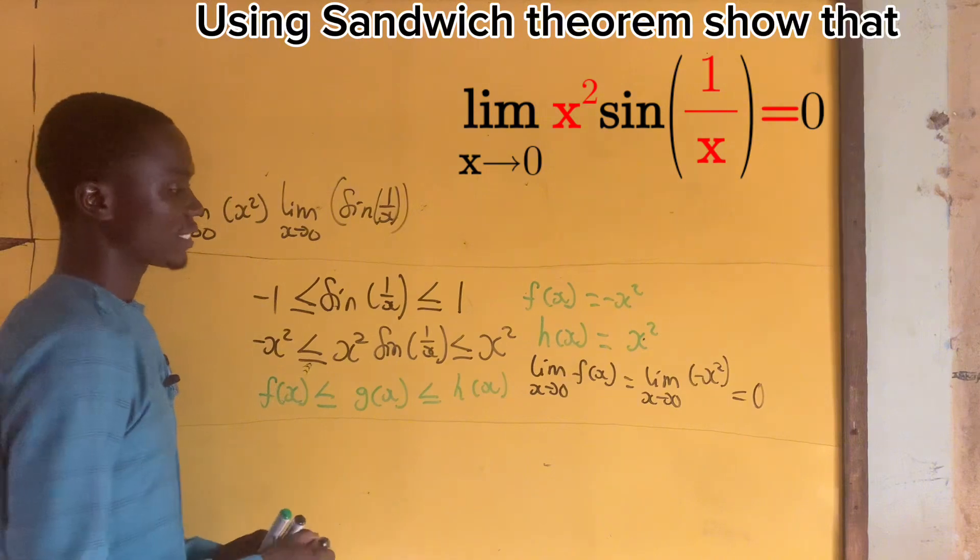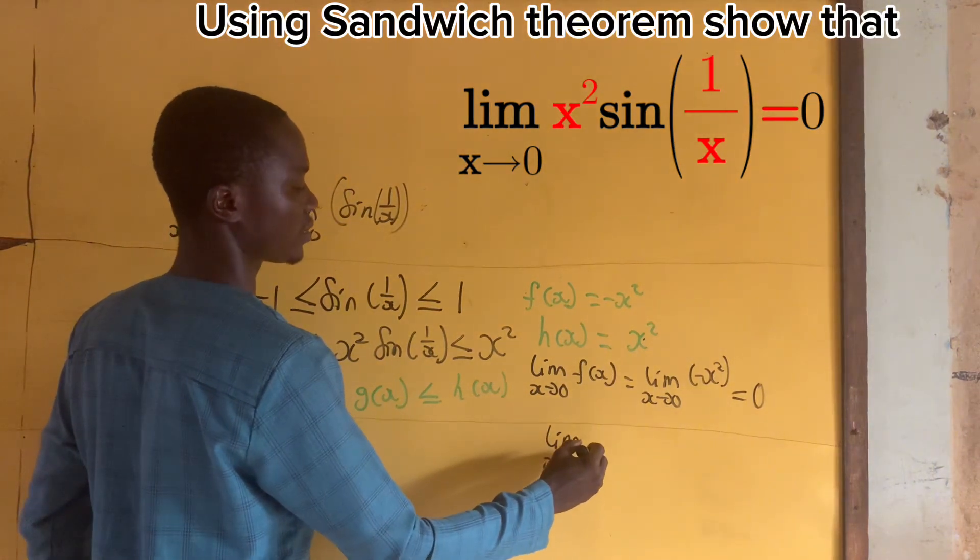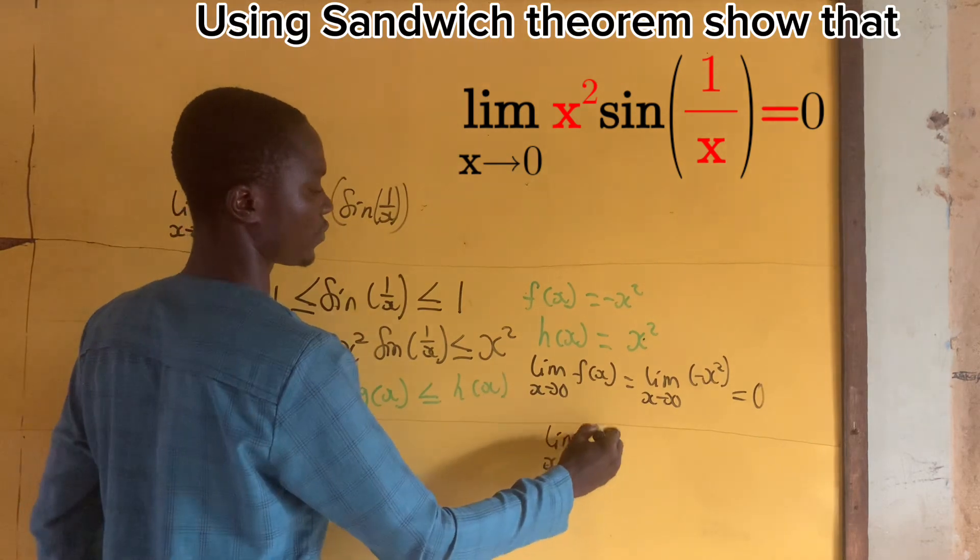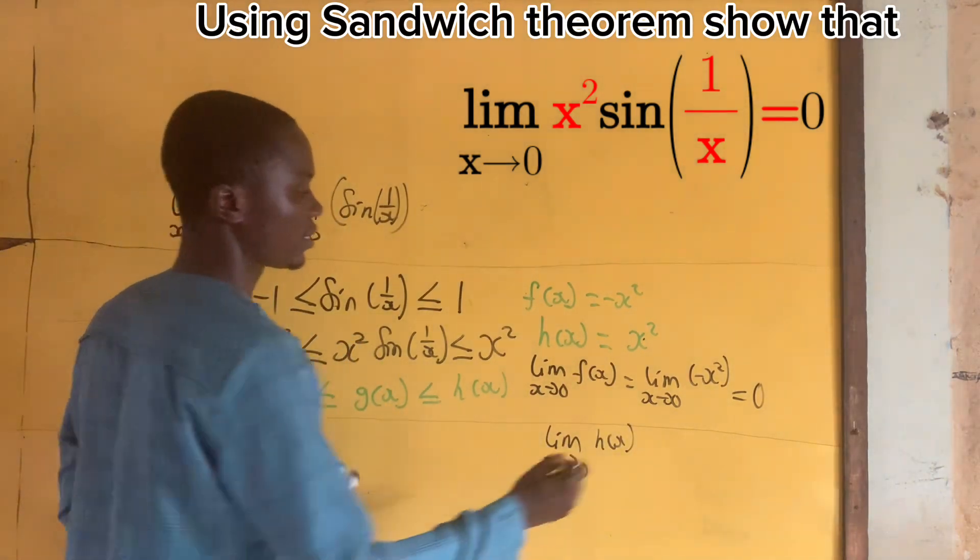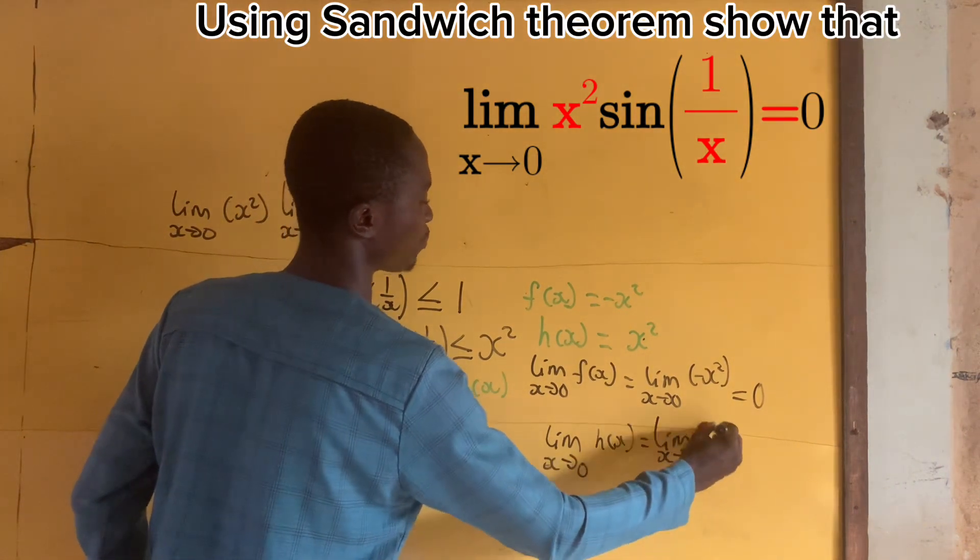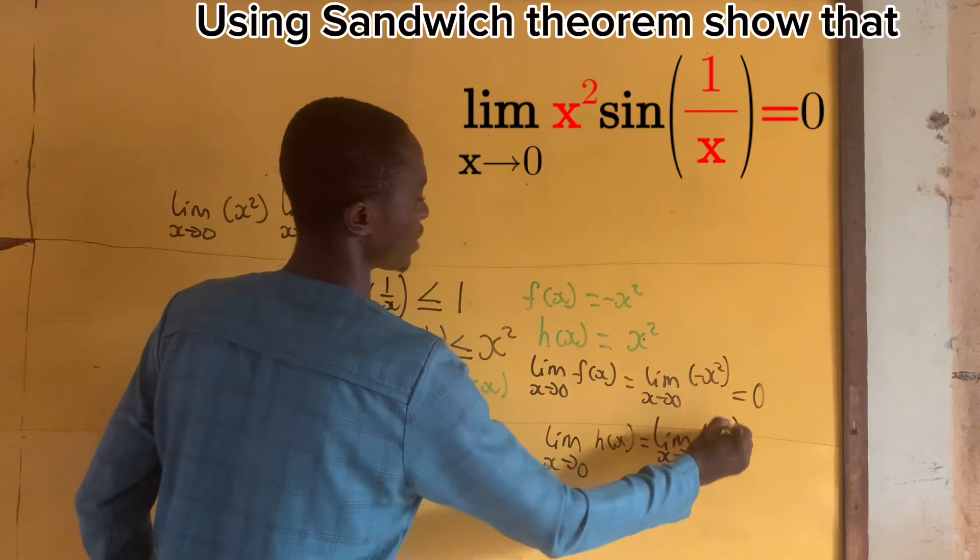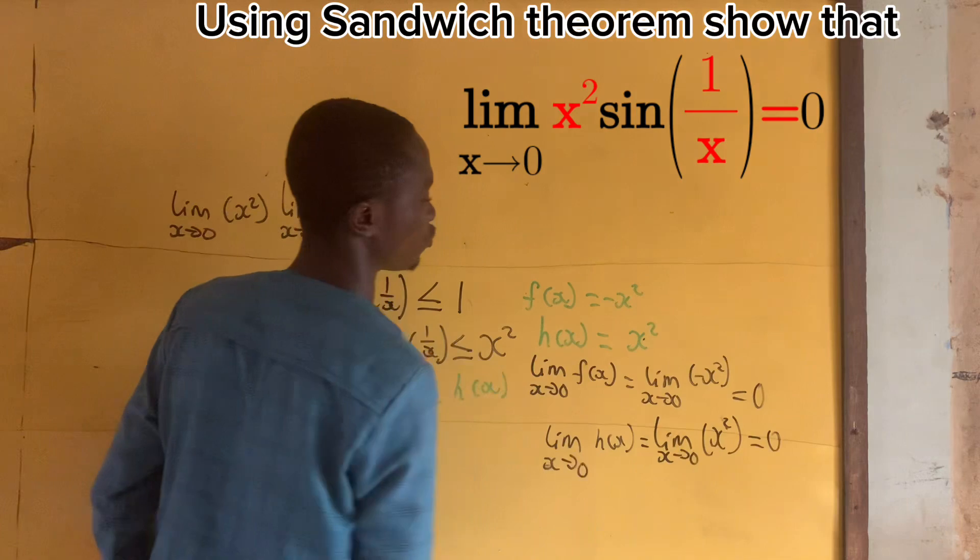And if we take the limit as x approaches 0 of h(x), that will be simply the limit as x approaches 0 of positive x². And if we put 0 here, 0² would be 0 and the limit would be 0.